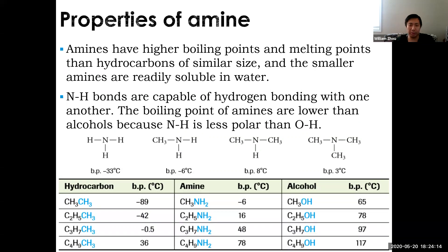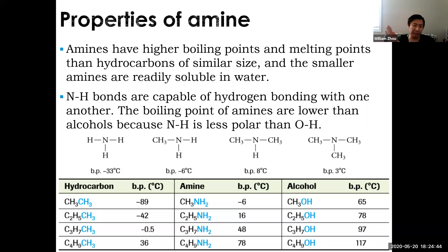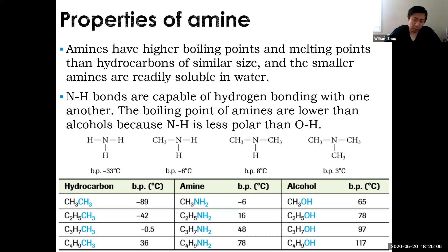Amines have relatively high boiling and melting points compared to other hydrocarbons of similar size, and they are very soluble. The reason is that the N-H bond found in amines is capable of hydrogen bonding. Hydrogen bonding exists between N-H, O-H, and F-H. Ammonia boils at -33°C, quite high for a tiny molecule - methane is around -180°C - because of the hydrogen bonding. Substituting a hydrogen to make a primary amine jumps the boiling point to -6°C.